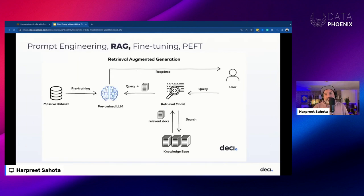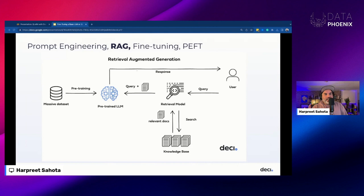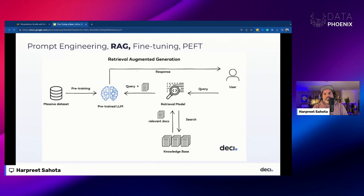Retrieval augmented generation essentially couples information retrieval with text generation. We need a vector database. We have some internal dataset — we chunk it up, split it up, embed it, and put those embeddings into a vector database. Then a user query comes along in the form of a prompt. We take that query, embed it, then search for relevant documents in our vector database. We bring those documents into the context window and have the language model reason over this additional context to give us an answer.